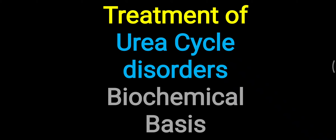Today's topic is about treatment of urea cycle disorders. The basic purpose of the urea cycle is detoxification of ammonia, because ammonia is a highly toxic molecule. The ultimate purpose is to remove ammonia in various forms.